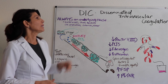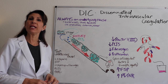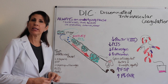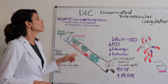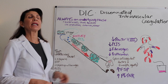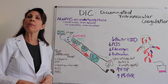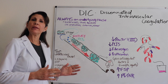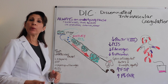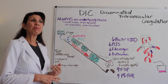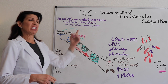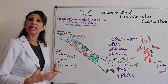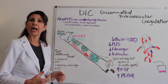DIC stands for Disseminated Intravascular Coagulation. DIC is always secondary to some underlying disorder. It fits really well in this unit following our shock unit because ischemia, sepsis, and toxins are all traumatic injuries to the body.